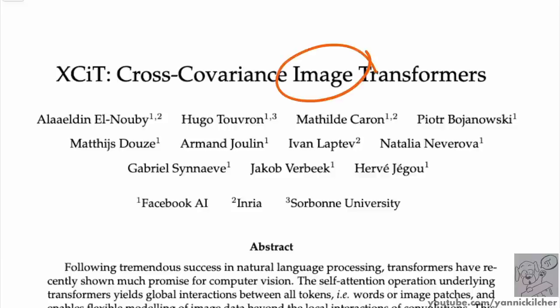These are akin to vision transformers that work on patches in patched images, and they reach comparable performance on things like ImageNet classification, self-supervised learning, but also dense prediction tasks like segmentation.